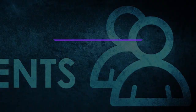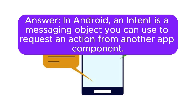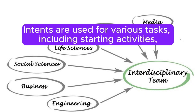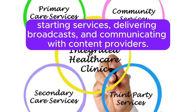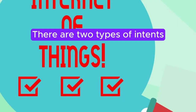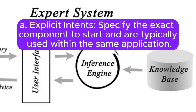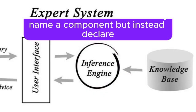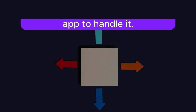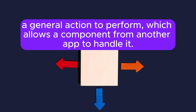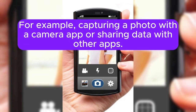Question 3: What are intents? In Android, an intent is a messaging object you can use to request an action from another app component. Intents are used for various tasks including starting activities, starting services, delivering broadcasts, and communicating with content providers. There are two types: Explicit intents specify the exact component to start and are typically used within the same application. Implicit intents do not directly name a component but instead declare a general action to perform, which allows a component from another app to handle it — for example, capturing a photo or sharing data.